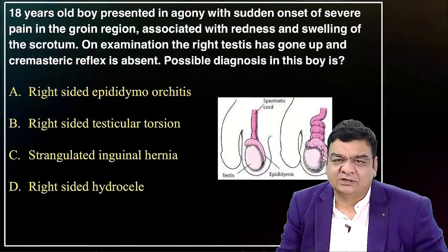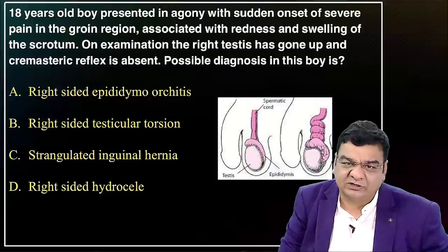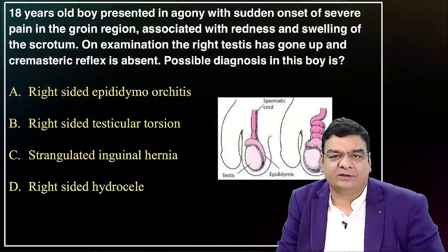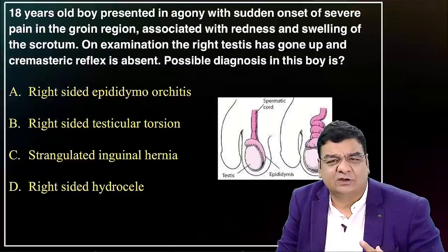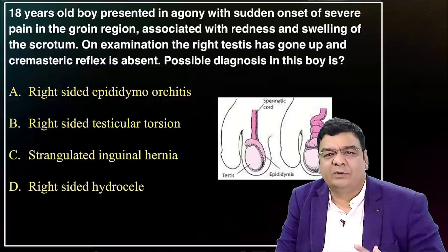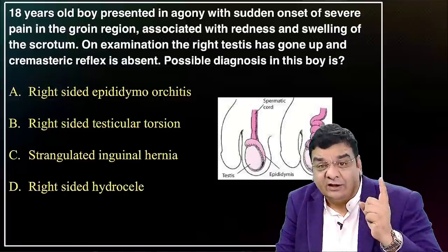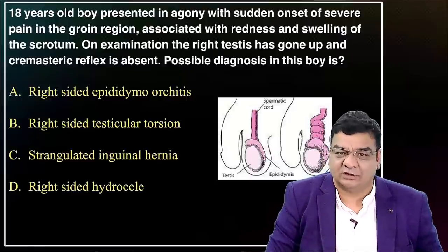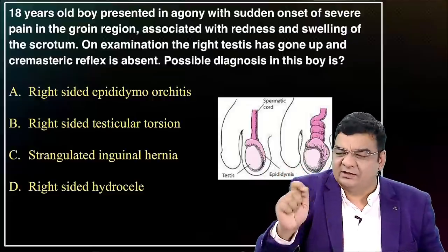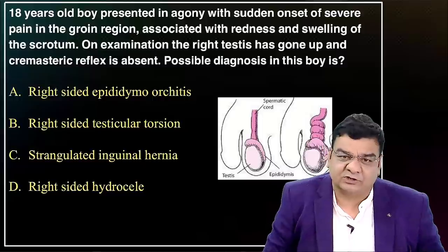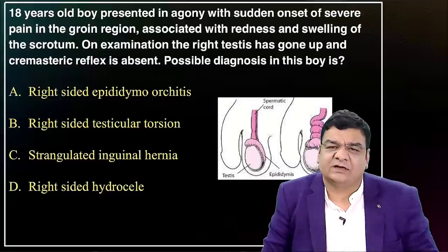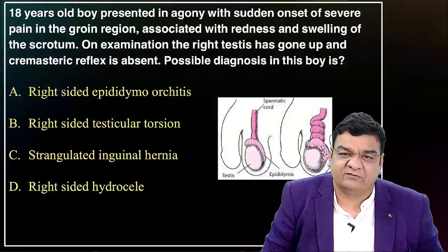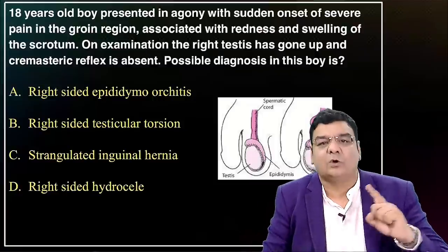Expect a question on testicular torsion — either a clinical story or image-based. Most common cause: bell-clapper deformity. Occurs most often ages 10–25 with redness, swelling, and pain in the scrotum. Prehn's sign differentiates: scrotal elevation relieves pain in epididymo-orchitis (positive Prehn's) but not in testicular torsion (negative Prehn's). On examination: testis pulled up, thickened spermatic cord, absent cremasteric reflex. Within 6 hours: 100% of testis saved by derotation orchidopexy + contralateral orchidopexy. After 24 hours: only 20% saved. If unsalvageable: orchidectomy + contralateral orchidopexy.